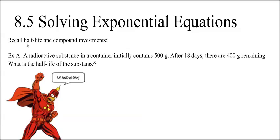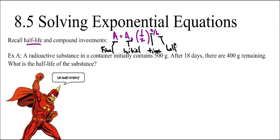I wanted to start by reminding you of the half-life and compound investment formulas. So for half-life, we have A is equal to A-naught times one-half to the t over h. Here, A is standing for the final amount. A-naught is the initial amount. One-half is because we're halving half-life. T is the time and H is the half-life. How long does it take to get to one-half of the initial amount?